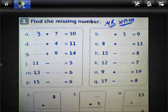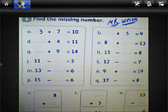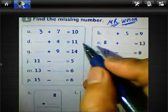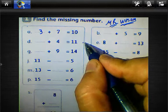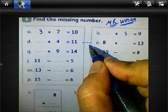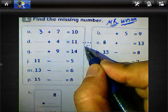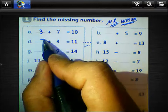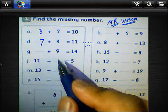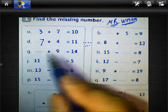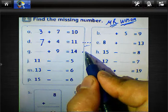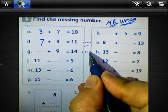And 4 plus blank equals 11. We must count from 4 to 11. Count on your fingers from 4 to 11: just after 4 — 5, 6, 7, 8, 9, 10, 11 — then the result will be 7. And 9 plus blank equals 14: just after 9 — 10, 11, 12, 13, 14.